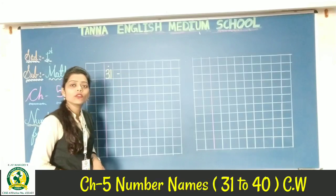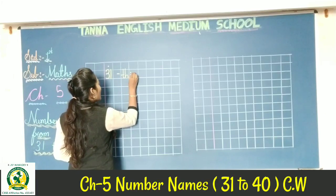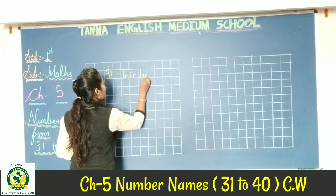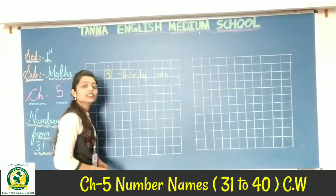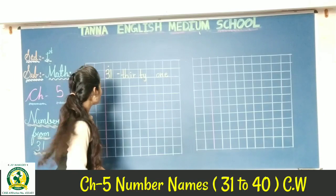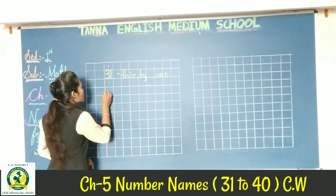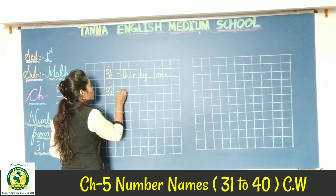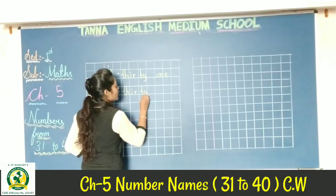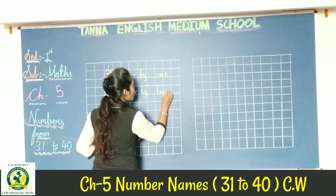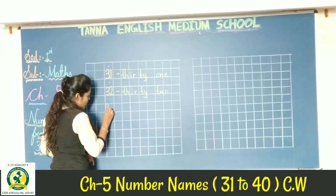What is the number name of 31? T-H-I-R-T-Y O-N-E. 31. Okay? Then 32: T-H-I-R-T-Y T-W-O. 32.